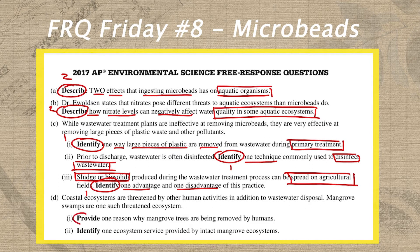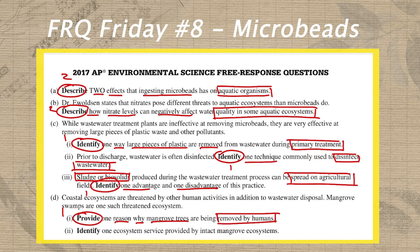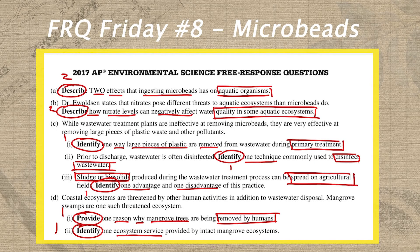In part D, we have a provide prompt — provide is kind of like identify, so I'm gonna write a one next to it. What we're providing is a reason why mangrove trees specifically are being removed by humans, so our answer has to be a reason that mangrove trees would be removed by humans. And finally, in part two, we have an identify prompt. What we're identifying is an ecosystem service — that's really key — and it has to be an ecosystem service provided by mangrove ecosystems.